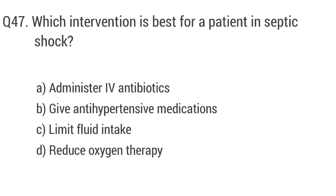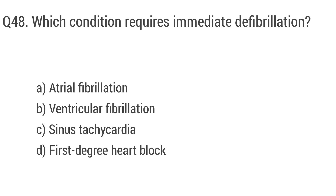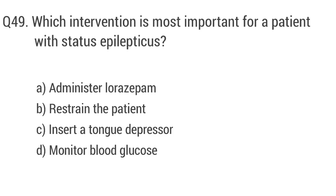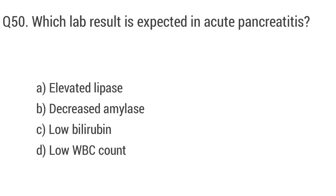Question 47: Which intervention is best for a patient in septic shock? The right answer is option A: Administer IV antibiotics. Question 48: Which condition requires immediate defibrillation? The right answer is option B: Ventricular fibrillation. Question 49: Which intervention is most important for a patient with status epilepticus? The right answer is option A: Administer lorazepam. Question 50: Which lab result is expected in acute pancreatitis? The right answer is option A: Elevated lipase.